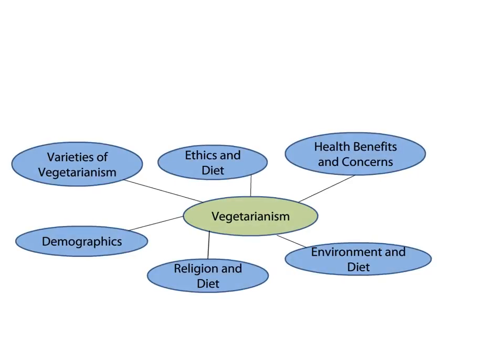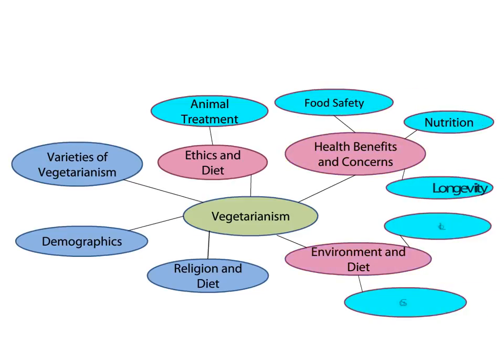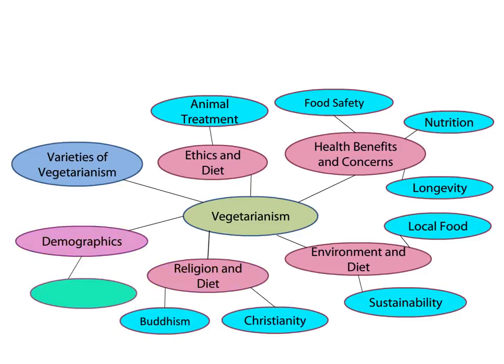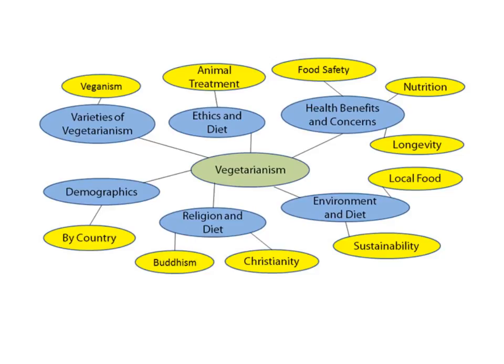I now want to delve deeper and identify examples or related ideas to my subtopics. For instance, ethics and diet is a subtopic of vegetarianism, and animal treatment is an important example of it. Continuing to do this for all of my new subtopics, I now have an extended list of concepts to explore. We may not use all the information that we write down, but this approach lets us easily see the various relationships among our possible topics.